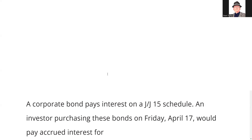This is about accrued interest — usually this is a recognition question. A corporate bond pays interest on a J and J 15 schedule; bonds pay semi-annually, so J and J means it pays interest on January 15th and July 15th. That's what that means.